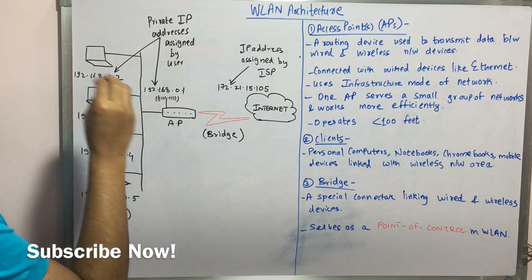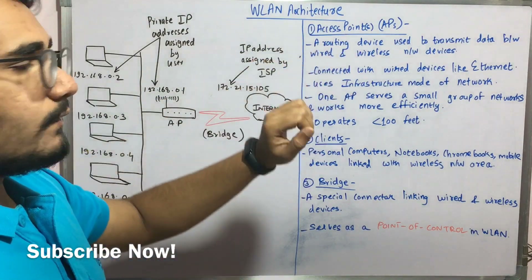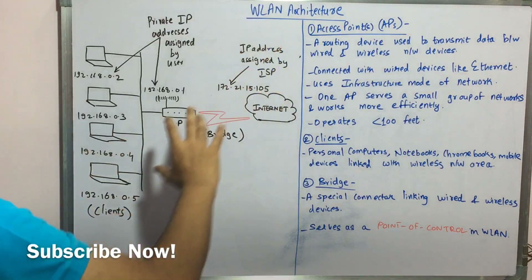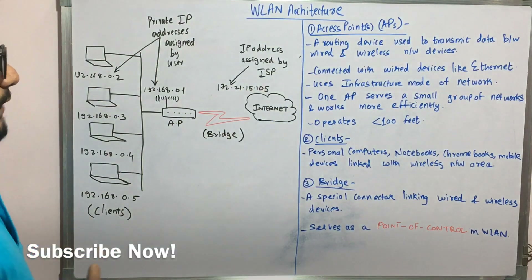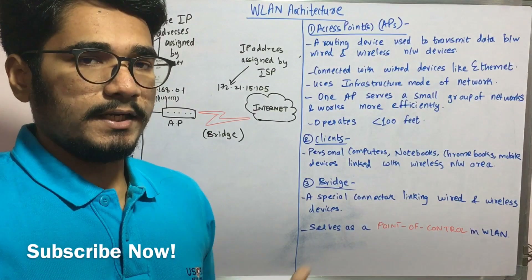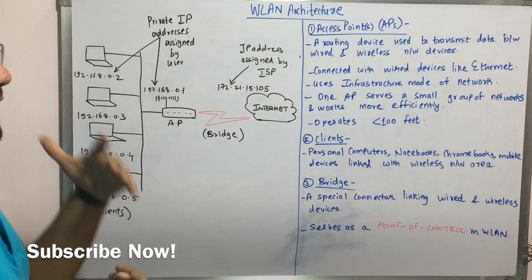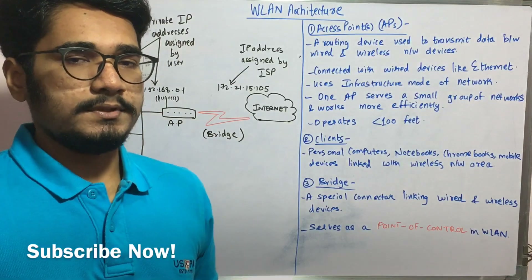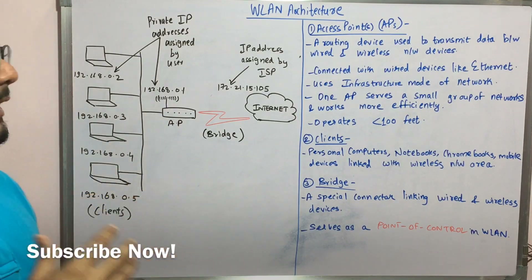The very first major component is the access point, which is called the AP. It is a routing device which is used to transmit the data between the wired and the wireless systems. It is connected with wired devices like ethernet — different coaxial cables or optical fiber cables might be there in order to connect these different devices — and you can see this as part of an infrastructure.